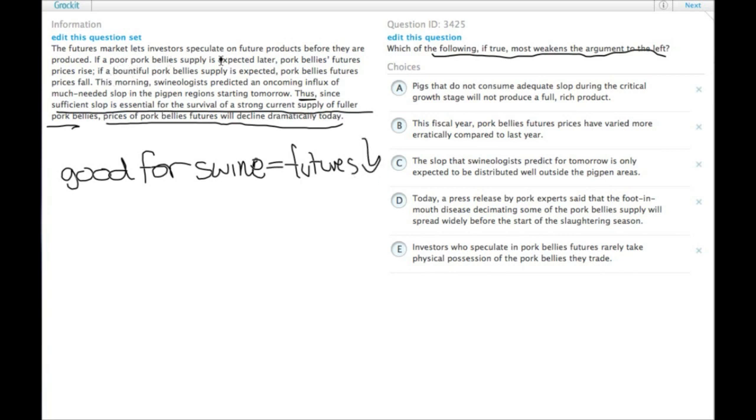So if there's a poor supply expected, like it says up here, our evidence here, poor pork belly supply is expected later, pork bellies futures rise. If bountiful pork belly supply is expected, pork bellies futures fall. And you have good pork bellies if you have something that's good for the pig and therefore futures fall.